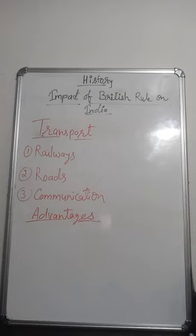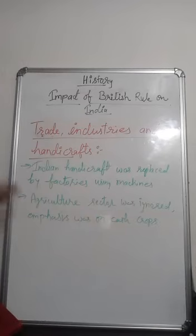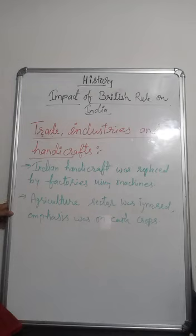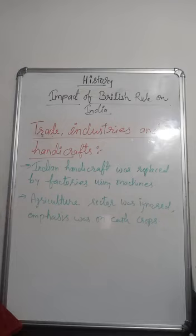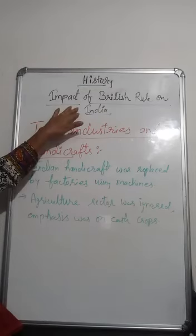Regarding trade, industries, and handicrafts: Indian handicrafts were replaced by factories using machines. Indian artisans lost their means of livelihood as markets were flooded with machine-made goods. British trade policy totally ruined the Indian economy as the British promoted only the products and goods they needed. They wanted India to become a big supplier of raw materials for their industries. The agriculture sector was ignored, with emphasis placed on cash crops.